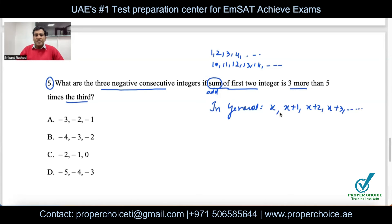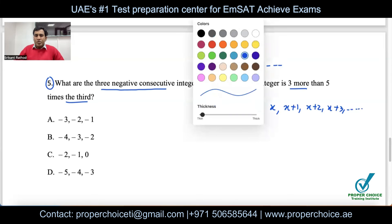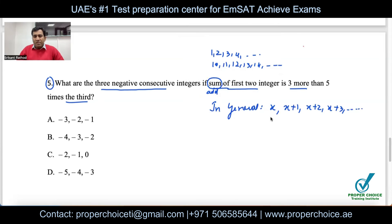To be clear: the first integer is x, the second is x + 1, and the third is x + 2. The equation is: (x) + (x + 1) = 3 + 5(x + 2).